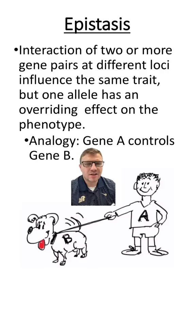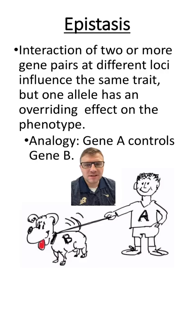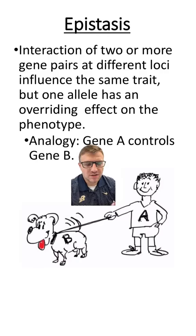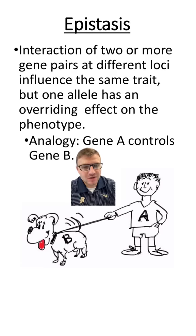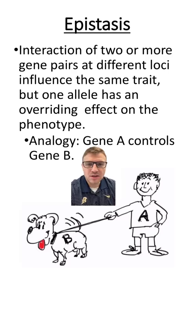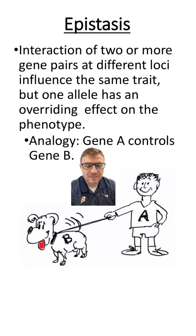Let's talk about the type of inheritance known as epistasis. This type of non-Mendelian genetics is going to be an interaction between two genes. In this interaction, one gene is going to have a controlling effect on the other gene. Basically, one gene is going to control another gene, and this interaction is going to determine the phenotype.